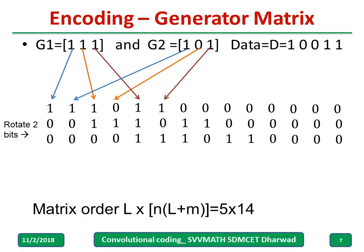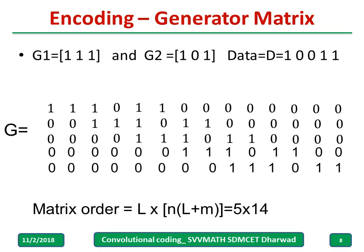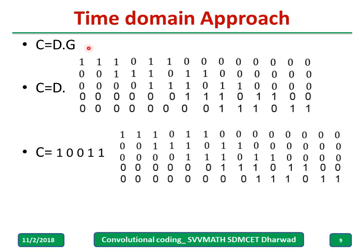Continue this process — knowing the matrix size is 5 by 14, rotate the required number of times. The resulting matrix G has size 5 cross 14. To get the codeword, compute C equal to D into G, where D is the given information or data bit sequence and G is the generator matrix just constructed.